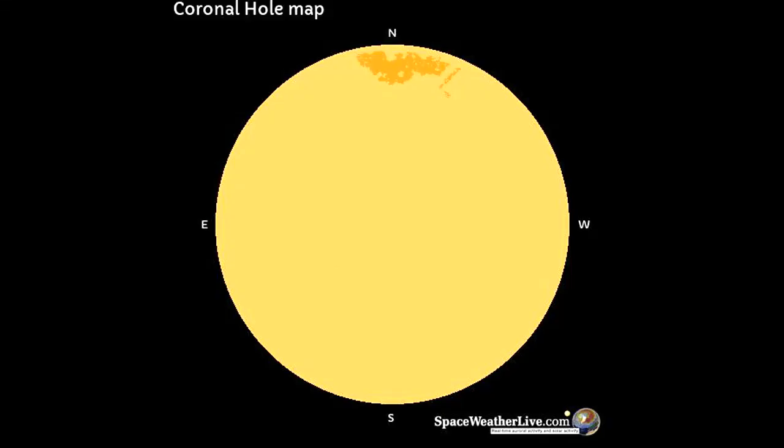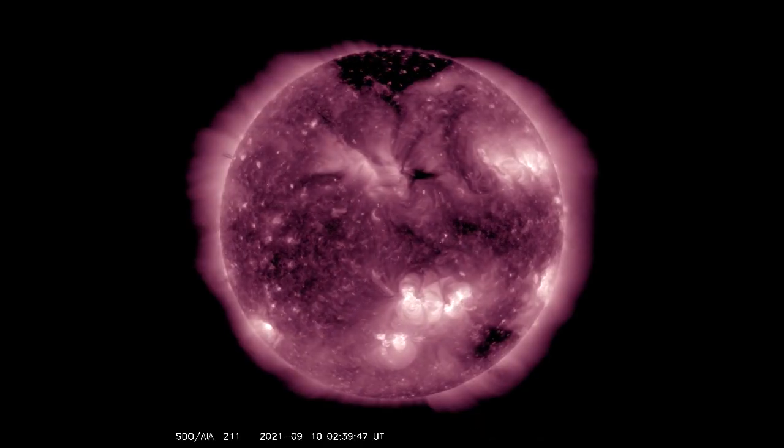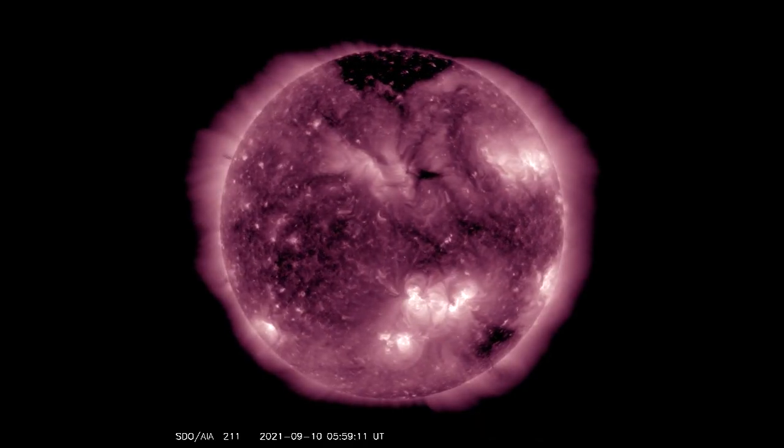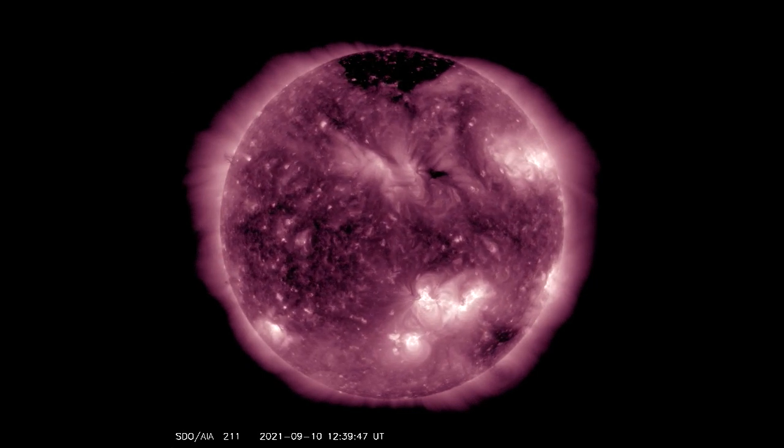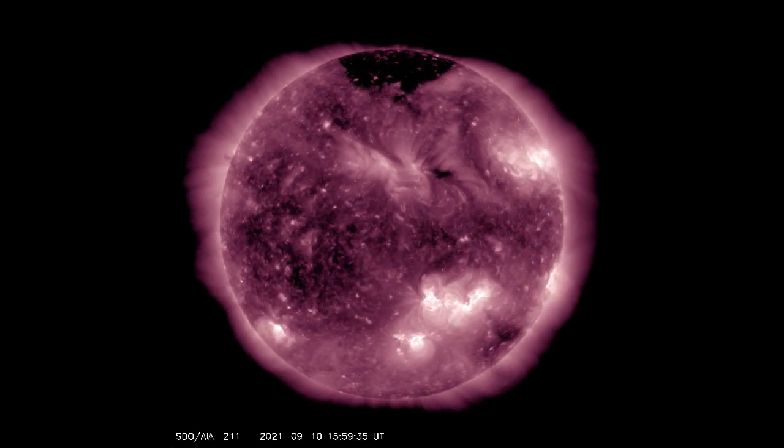On this coronal hole map, the latest coronal hole is seen at the northern location of the Sun. The coronal hole can be seen using this SDO-211 filter.